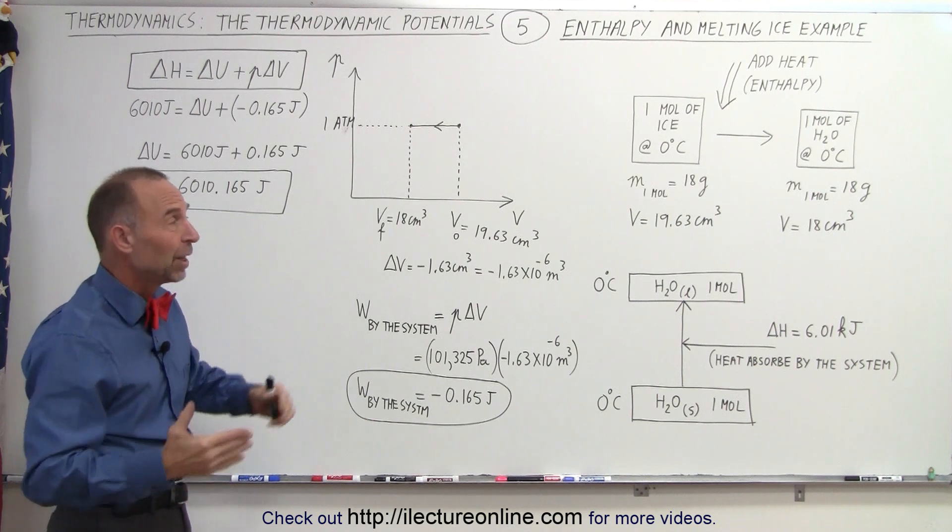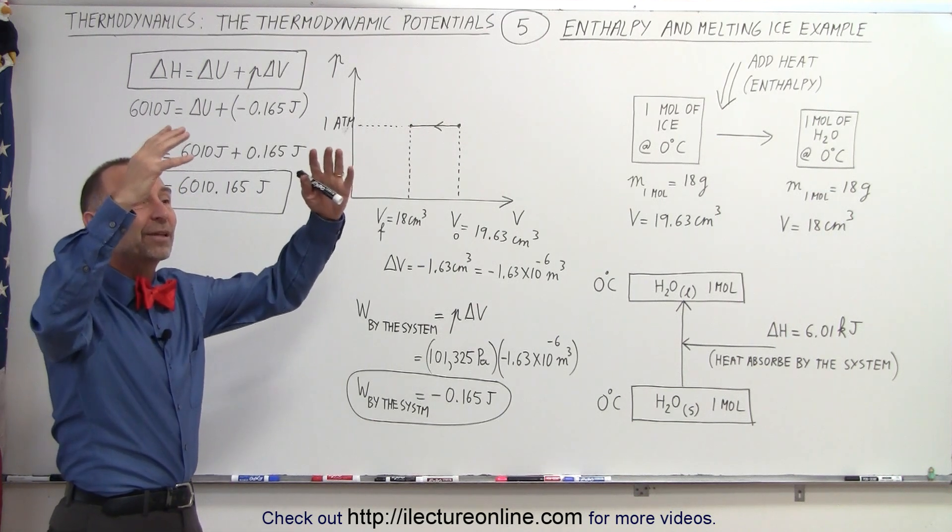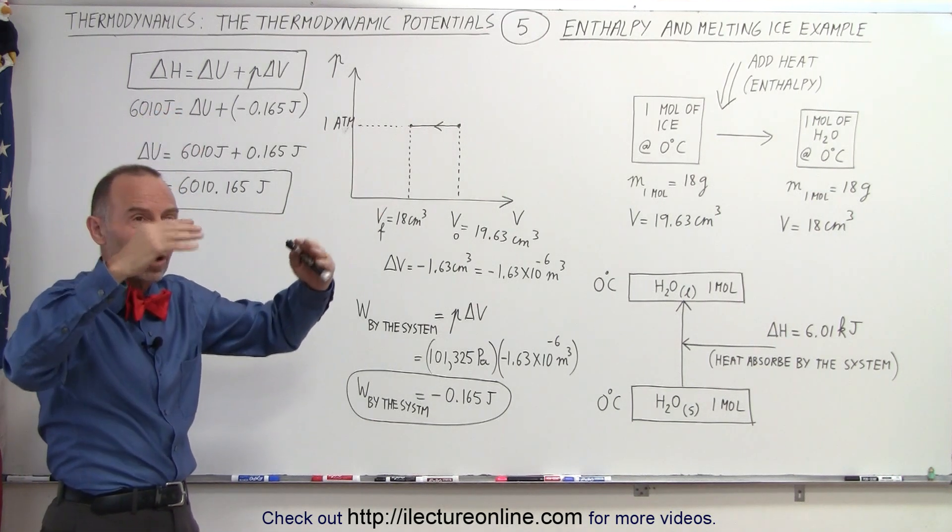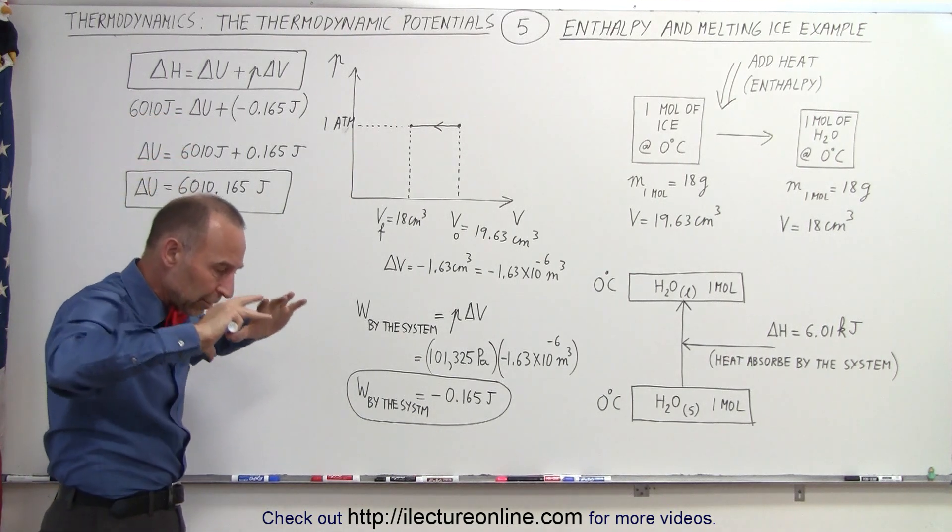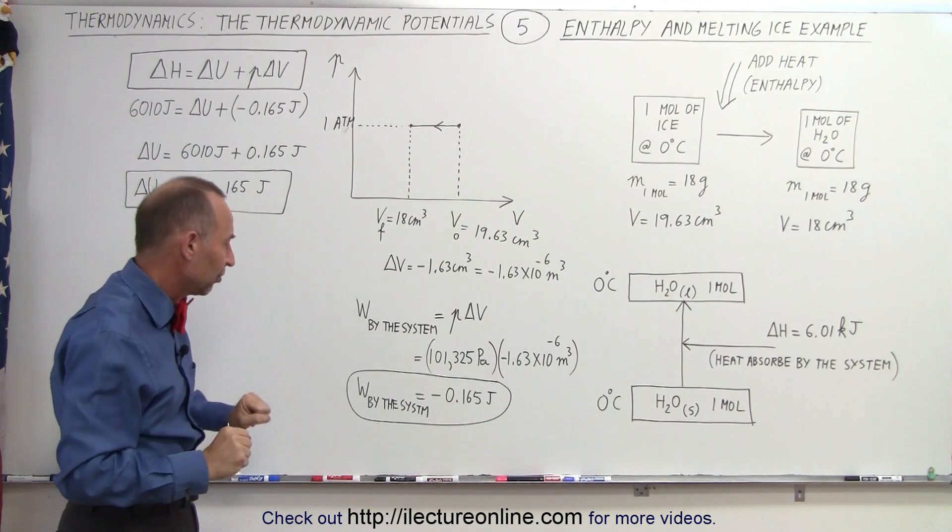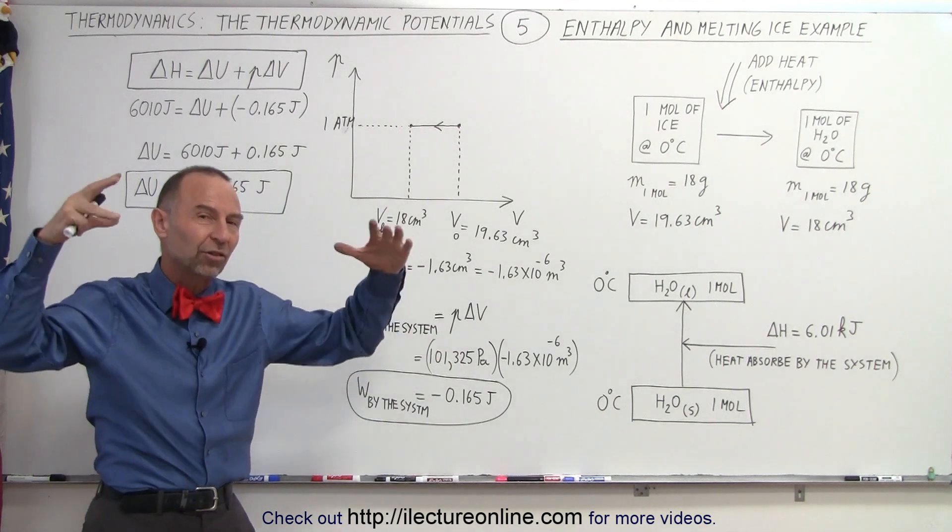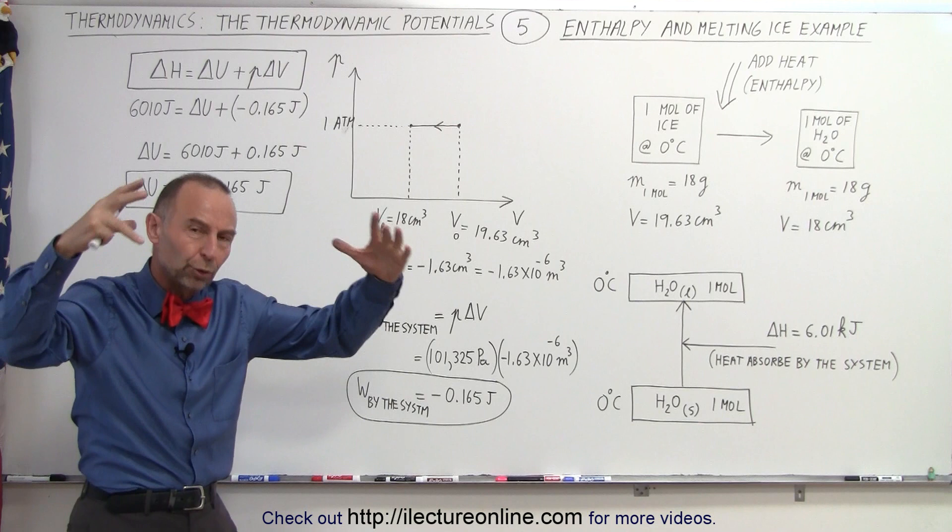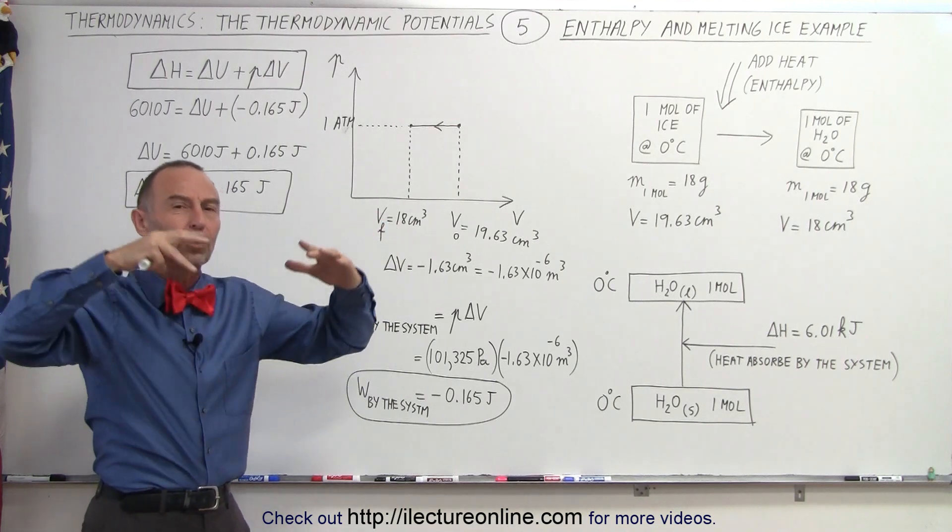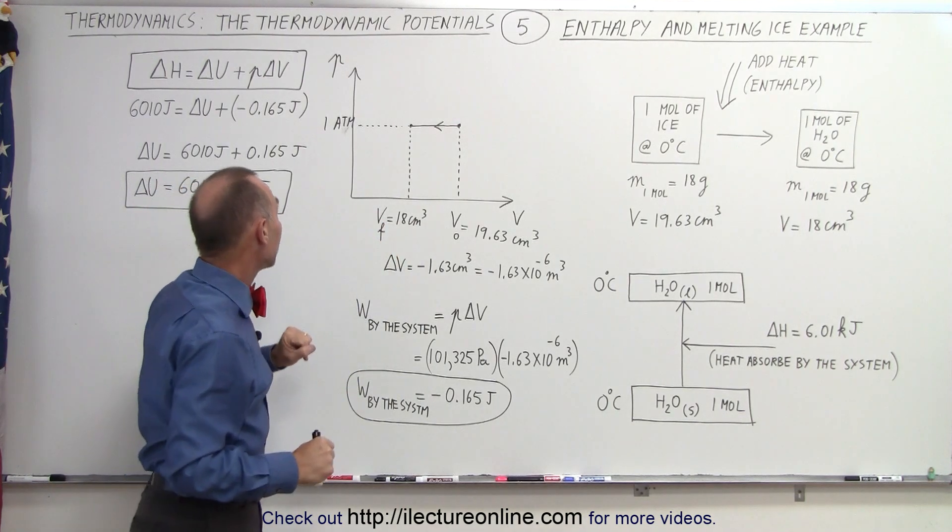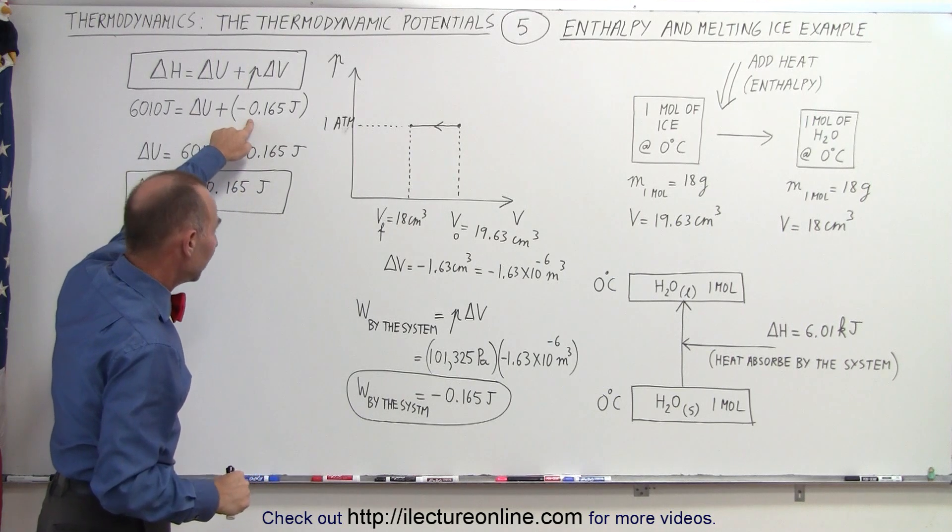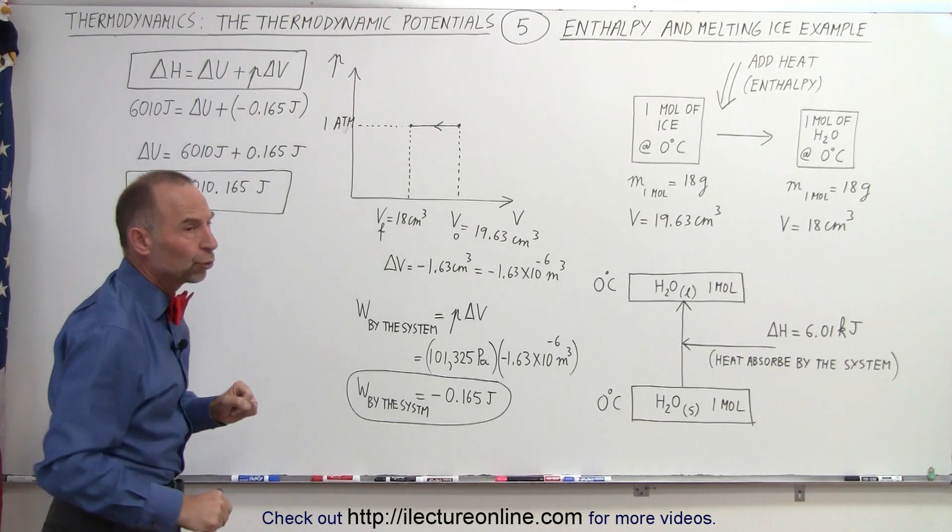Let me say that better. When the ice melts, the volume of the ice cube is larger than the volume of the water, so the volume is reduced by the atmosphere pushing down on the system. And therefore, it's negative work done because it's the atmosphere doing work on the system, not the system doing work on the atmosphere. So we end up with negative W or a negative 0.165 joules.